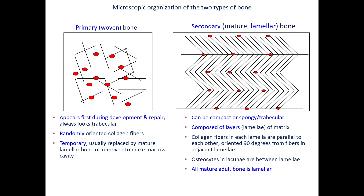A cancer called osteosarcoma — osteo for bone, sarcoma meaning a tumor from connective tissue — can arise from osteoprogenitor cells. These tumors are characterized by production of disorganized woven bone from mesenchyme. Not surprisingly, these tumors are often first detected by fractures at the site of the tumor.